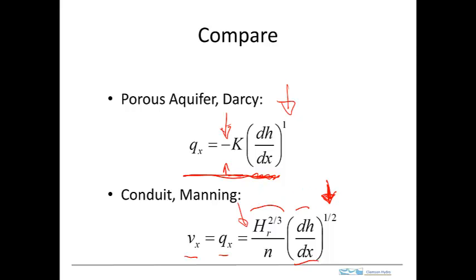In Manning's Law, the hydraulic head gradient is raised to the one-half power, so we have to take the hydraulic head gradient and just take the positive absolute value of it. Because of that, we can't really get Manning's Law to determine what the flow direction is. We have to already know what the flow direction is. That's why there's no minus sign in Manning's Law.